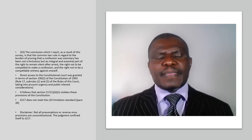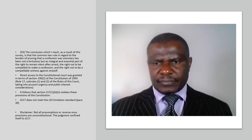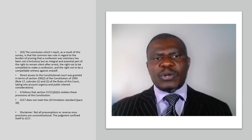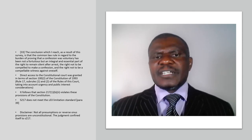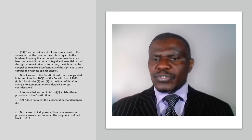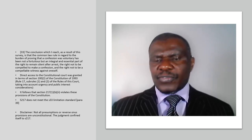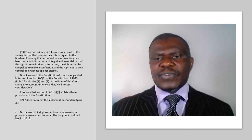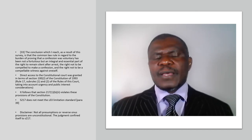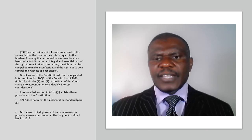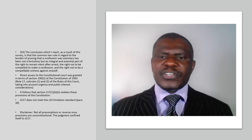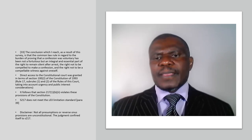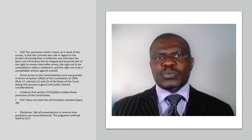Kentridge J went on to outline as a disclaimer that not all presumptions or reverse onus provisions were being declared unconstitutional. In other words, it was specifically the unconstitutionality of Section 217 of the Criminal Procedure Act of 1955 which was in question. The law would still have to make provision for some reverse onus provisions in many other instances where that would be applicable.